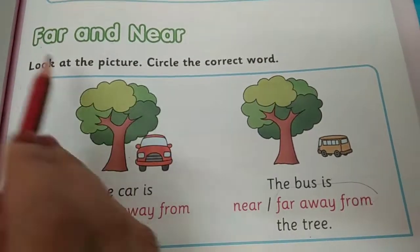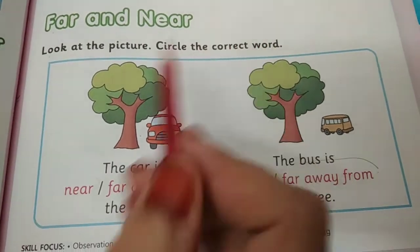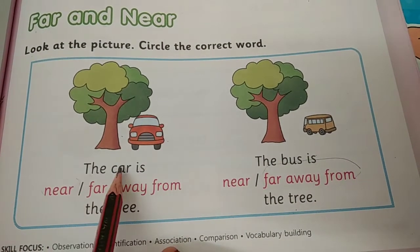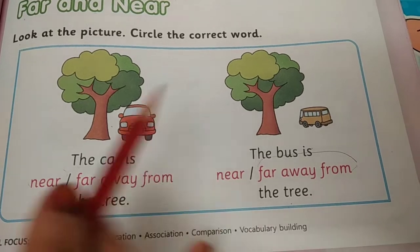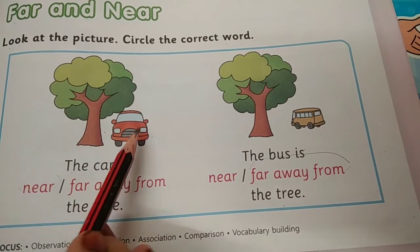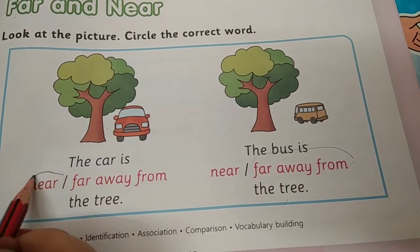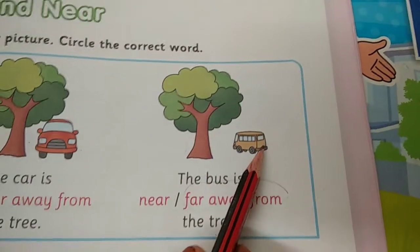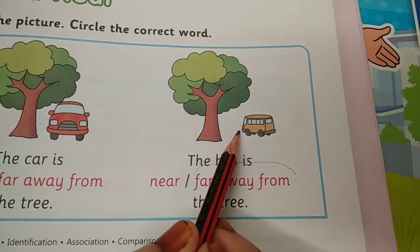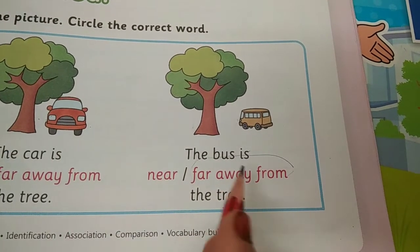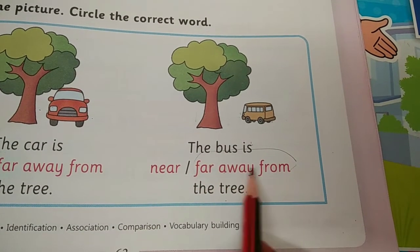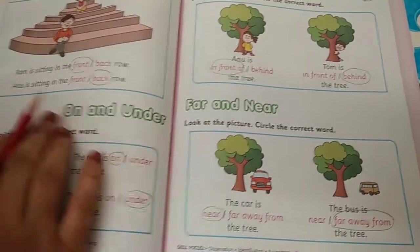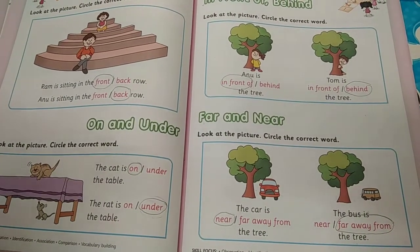Then far and near. Far yani ke door and near yani nazdik. Look at the picture. Circle the correct word. Right now you all are far from me. The car is near or far away from the tree? Yeh car tree se nazdik hai ya door hai? Tree ke nazdik hai, so near. Nazdik ko hum English mein near kahenge. The car is near the tree. Abhi yeh tree hai and this is the bus, kuch duri pe hai, distance dikhaya aapko yaha pe. This distance is far away. The bus is far away from the tree. Far away ko humne circle kiya. With this we complete this and you have to do this exercise and show it to me. Okay children, bye for now.